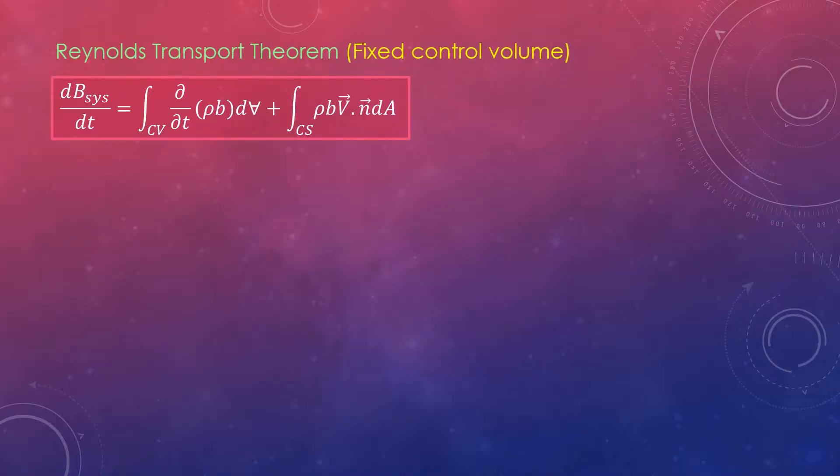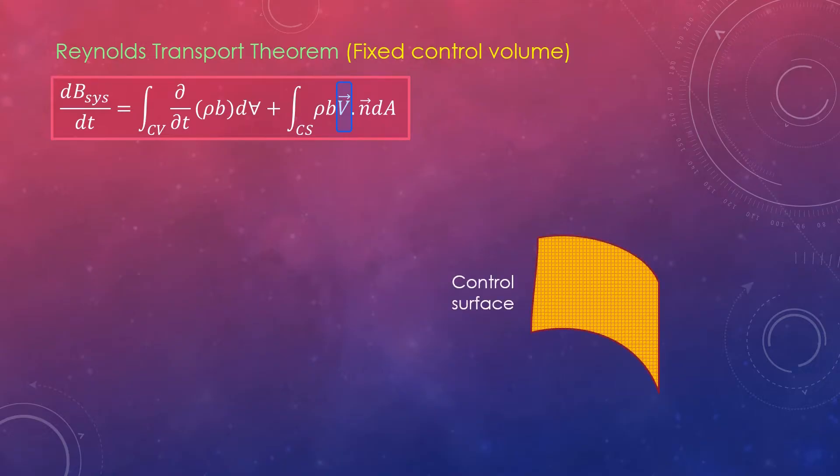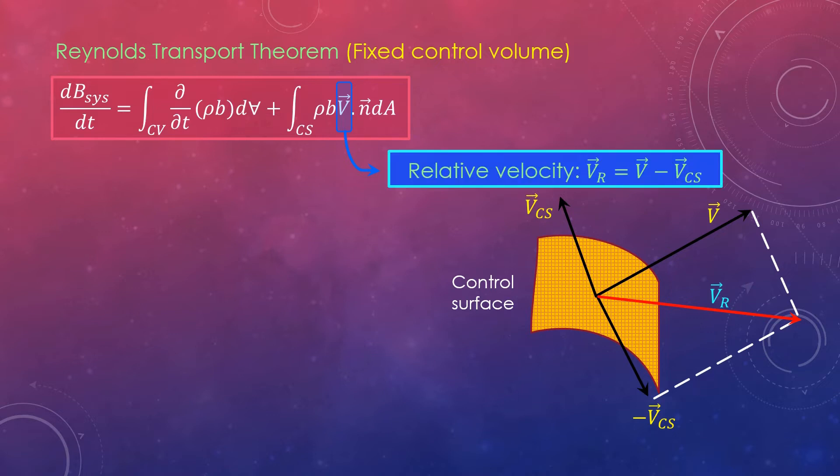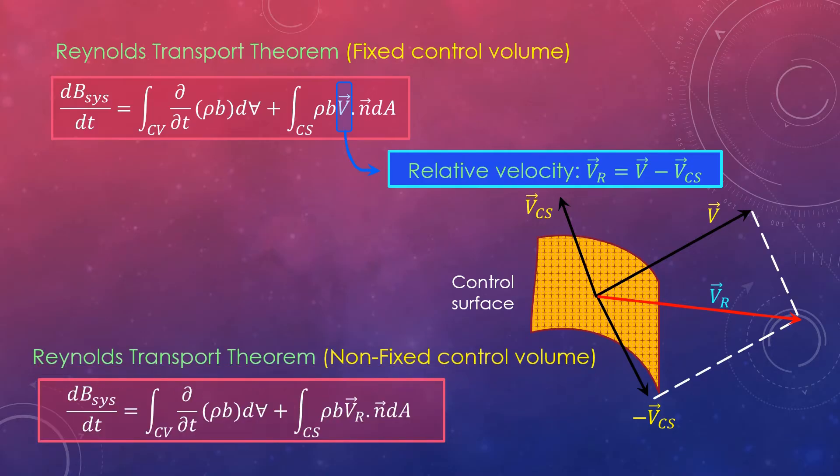This equation is also valid for moving or deforming control volumes provided that the absolute fluid velocity V in the last term is replaced by the relative velocity V_r. Relative velocity crossing a control surface can be found by vector addition of the absolute velocity of the fluid and the negative of the local velocity of the control surface, given as V_r equals V minus V_CS. On substituting the absolute fluid velocity with the relative velocity we get the most general form of the Reynolds transport theorem given as this.